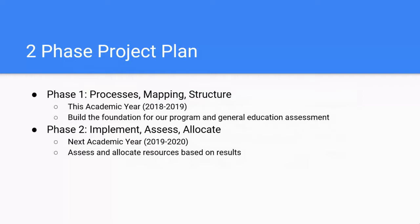Our two-phase project plan: the first phase is process mapping and structure, and that's this academic year — this fall semester and next spring semester — really focusing on building that foundation for both our program and our general education outcomes assessment. The next academic year, fall 2019 to spring 2020, we'll be focusing on implementing our processes, assessing, and allocating resources based on those results.